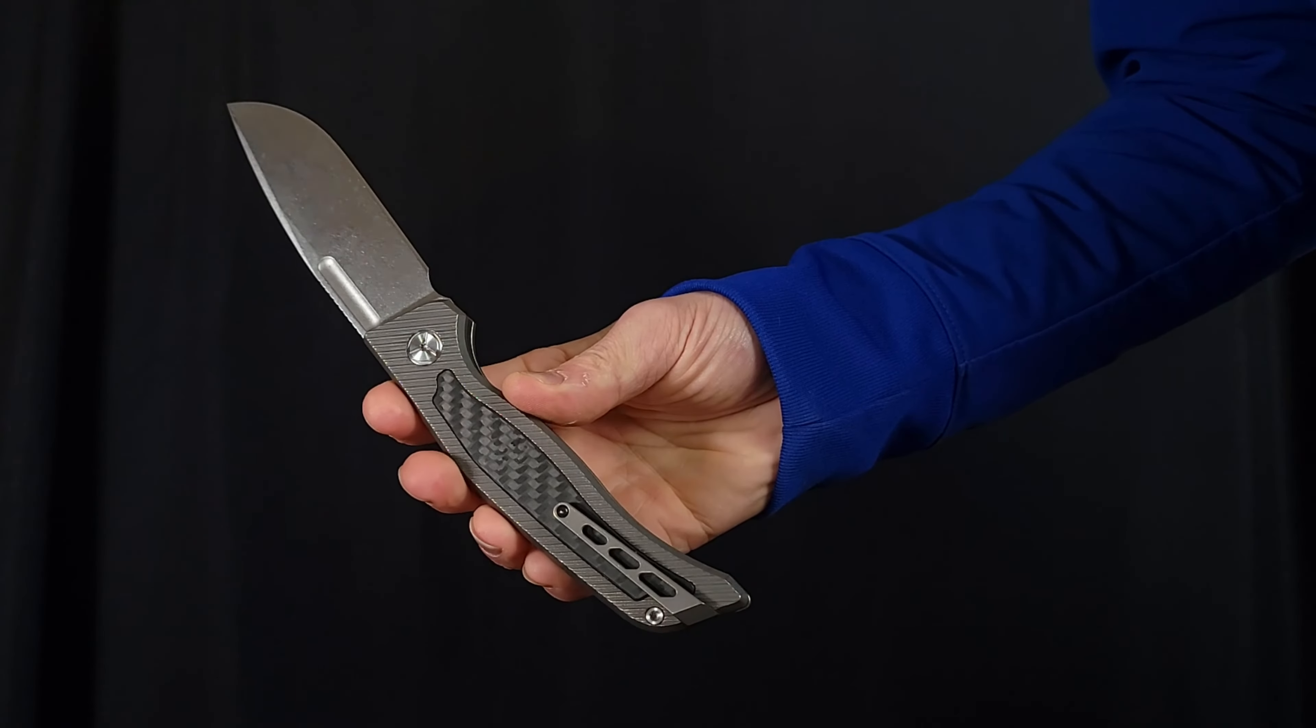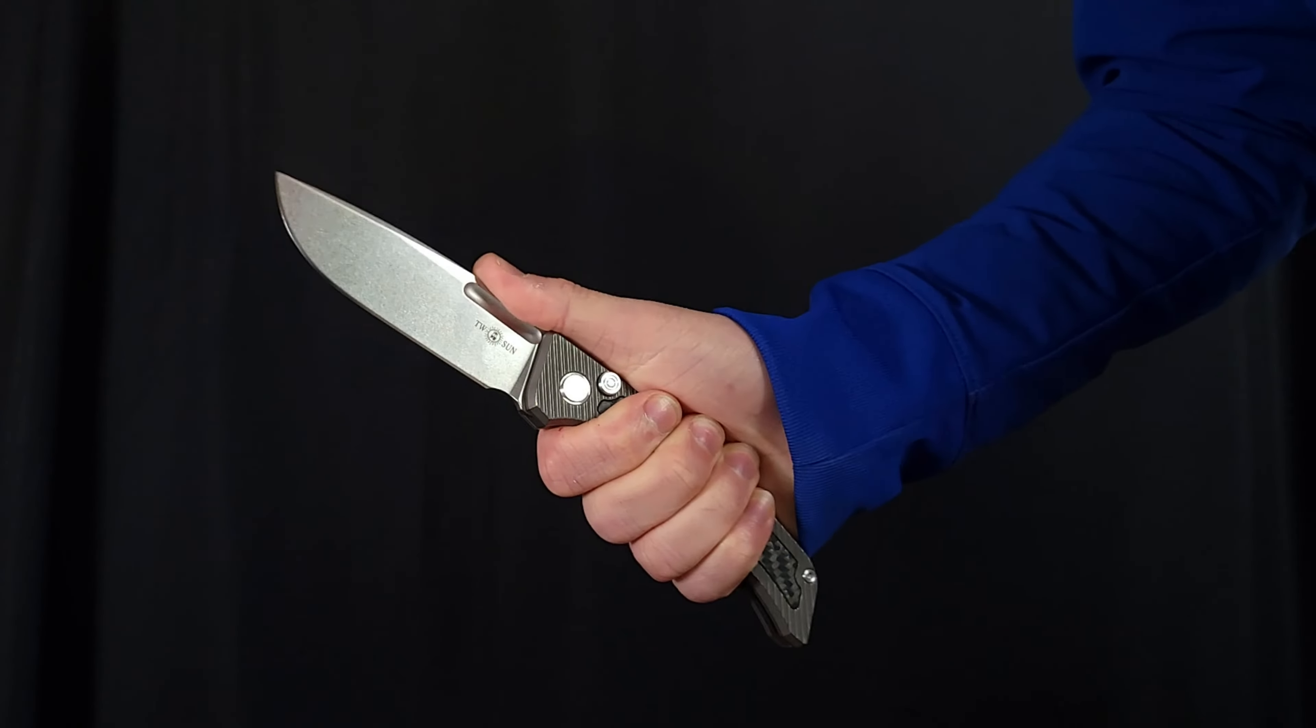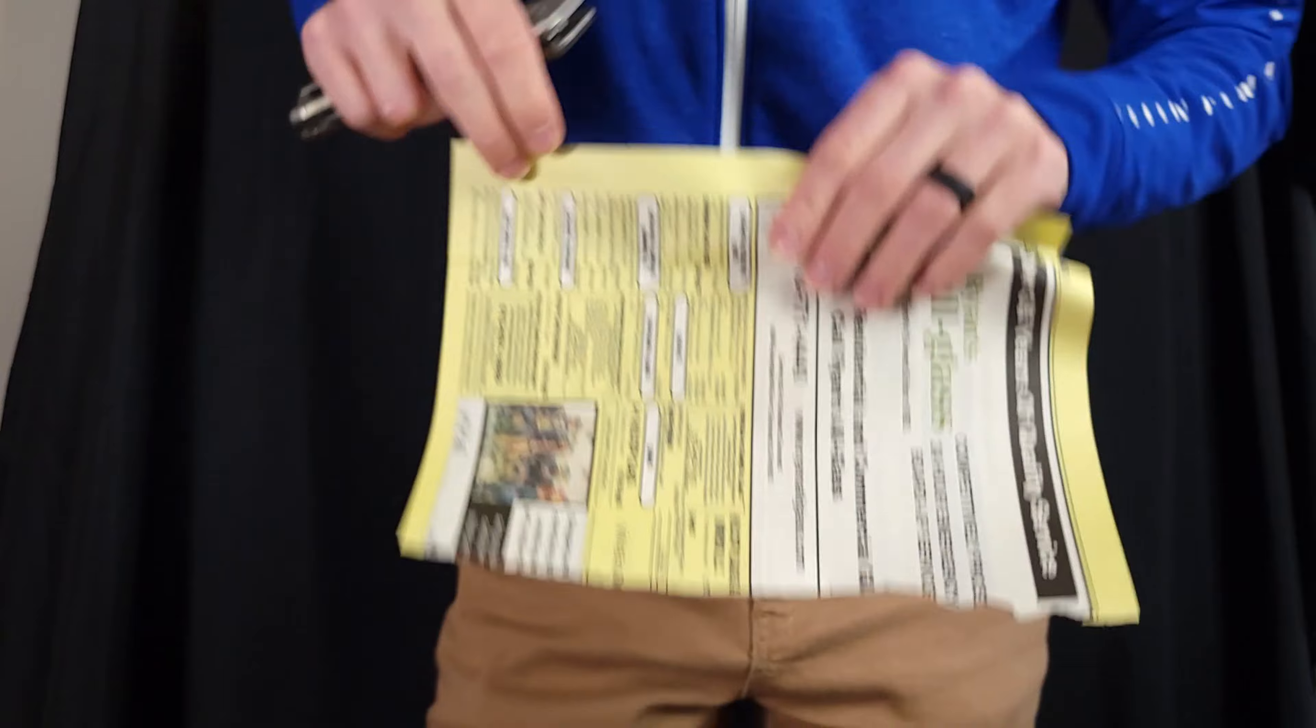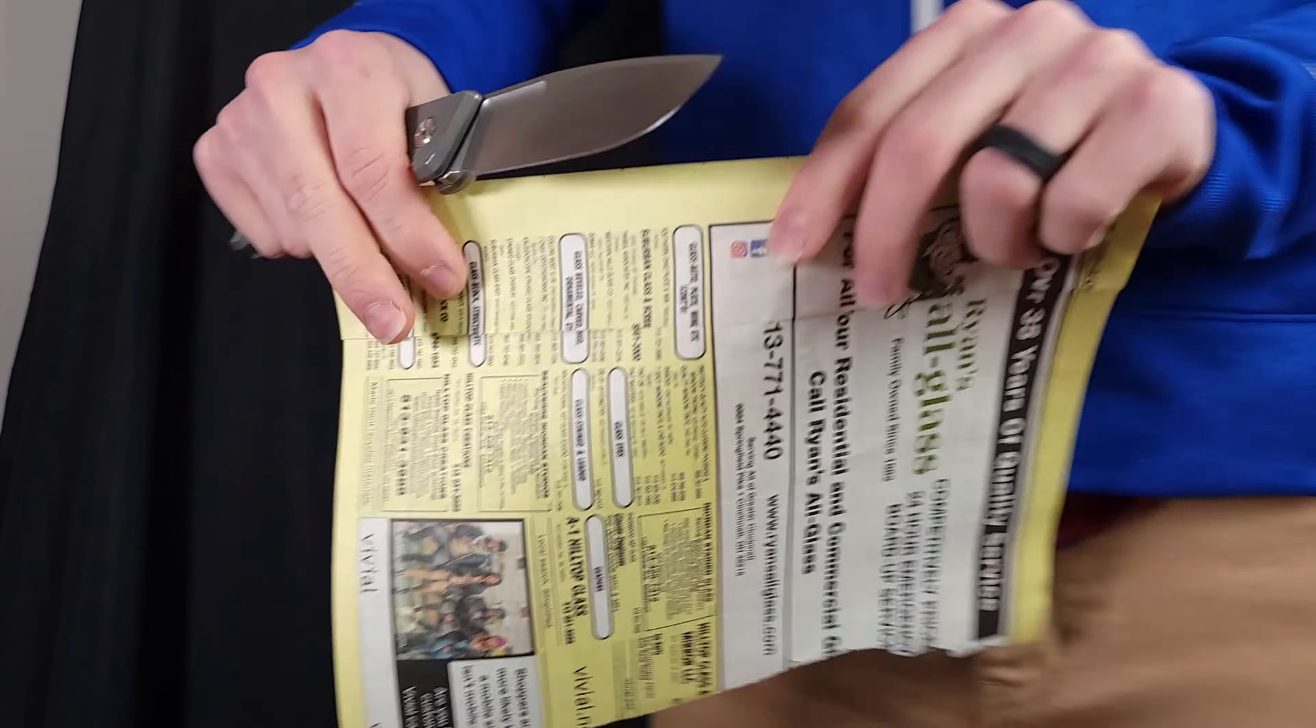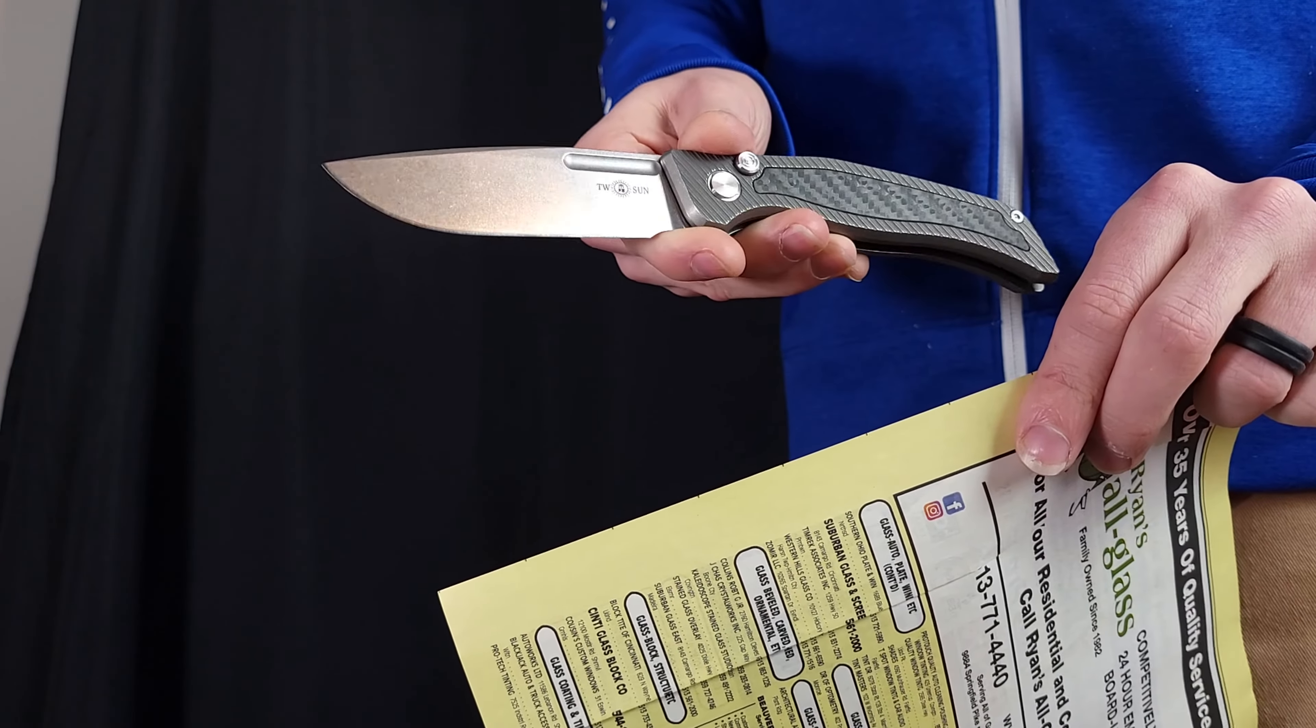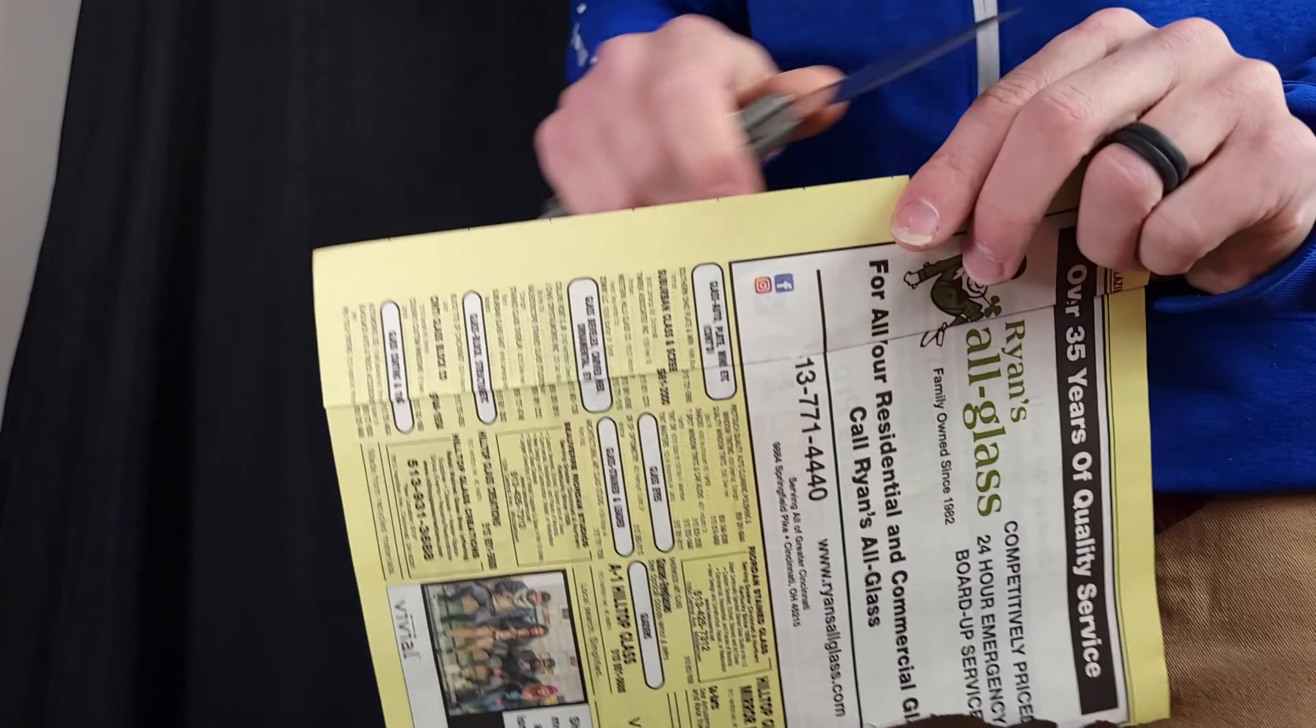Now a folding machete with great ergos and top-notch button lock fidget factor is borderline useless without a good blade. And this particular folding machete button lock does in fact have an excellent blade. Like I mentioned before, this variant, the original version, is rocking a 14C28N stainless blade with a full flat grind. Even though the blade stock is kind of outrageous like everything else, that flat grind brings it down to a decently thin and slicey final cutting edge.